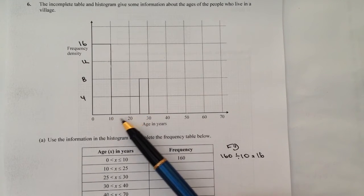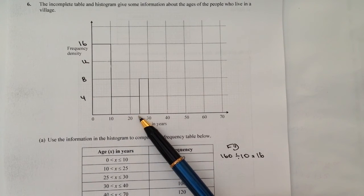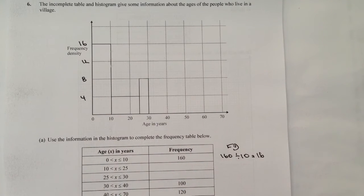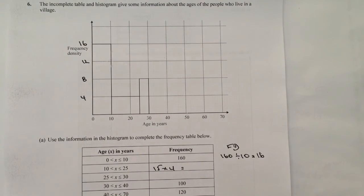So that allows me then to calculate the information I know that I've got here. So my class width is 15 and my frequency density is 4. So that's going to, using my formula, give me a frequency of 60.